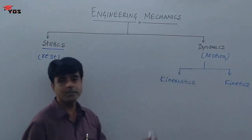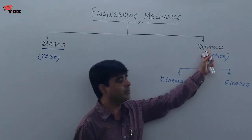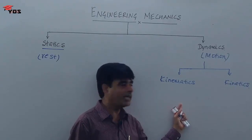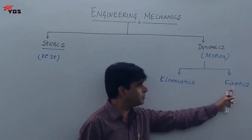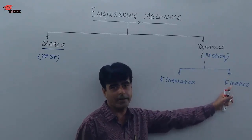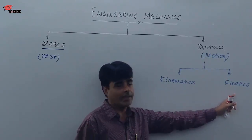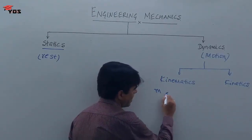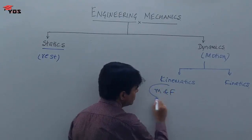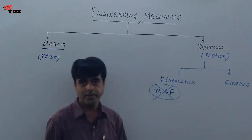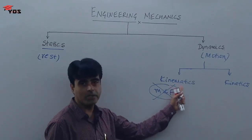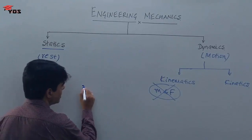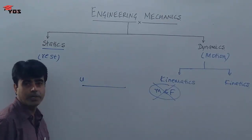Kinematics is a branch of dynamics where the body or particle is in motion, and kinetics is also a branch of dynamics where the body is in motion. The difference is: in kinematics we do not consider mass and force — those two quantities are not considered.